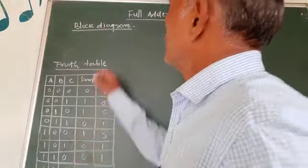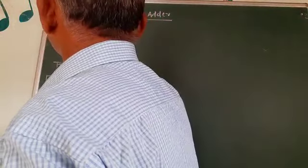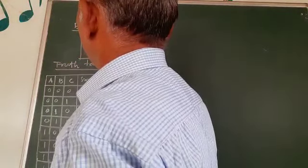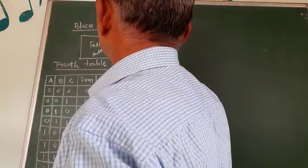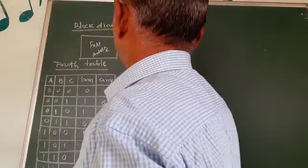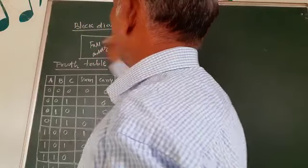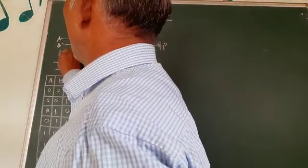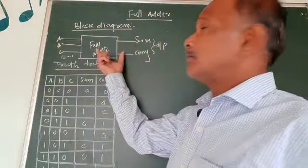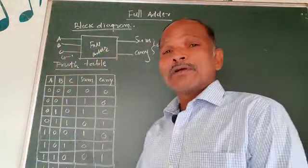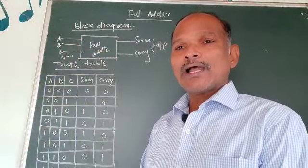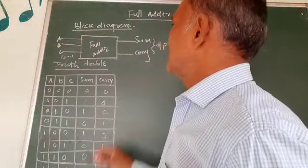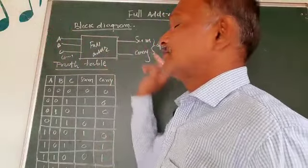If we consider the full block diagram, this is the block that is the full adder. This is sum, this is carry — these are the outputs. And these are the three input bits A, B, C or C(n-1). So this is the block diagram of the full adder. Remember, the full adder is used to add three single bits A, B, C. This is the input and this is the output of the full adder.